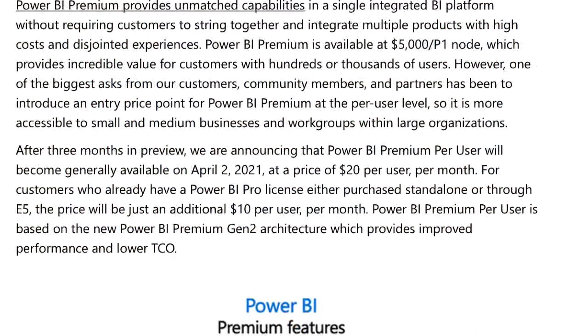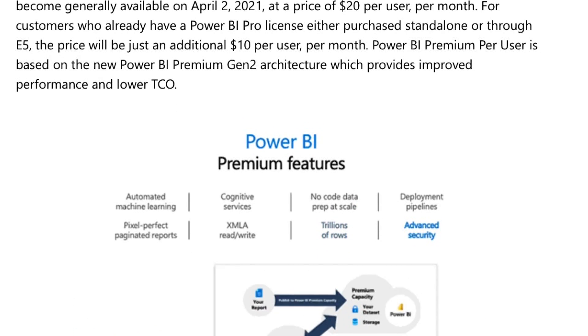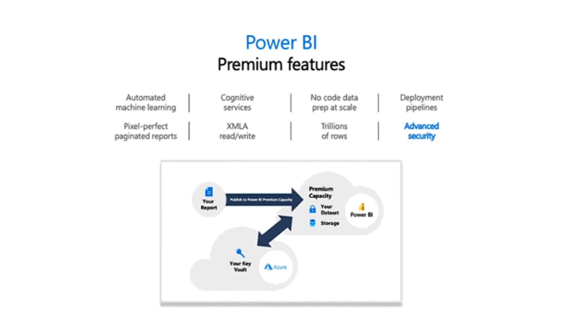Premium Per User allows you to get access to all of your favorite Premium features without having to start at $5,000 per month, but rather only $10 per month on top of your existing Power BI Pro licenses for a total of $20 per month. This is really powerful because small and medium businesses can now scale their costs based on the number of people who are going to be actually taking advantage of these services. If you have a company of 50 people at $20 per month per user, your total cost per month is now only $1,000 instead of $5,000 to get access to all of the same Premium features like paginated reports, deployment pipelines, and more.